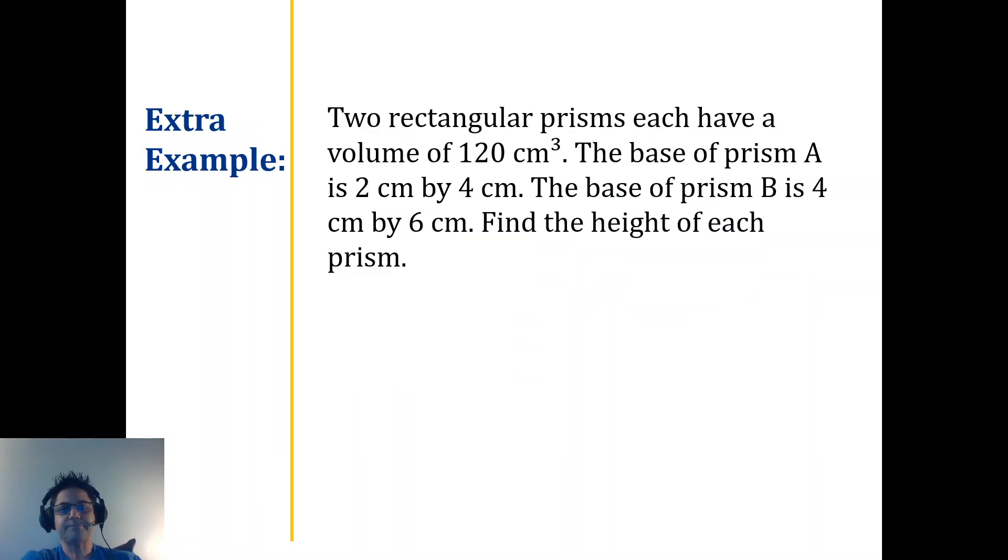All right, this is what we are working towards: our word problems. All right, two rectangular prisms each have a volume of 120 centimeters cubed, so that means they have equal volume. The base of prism A is 2 by 4, the base of prism B is 4 by 6. Find the height of each prism. So it's really just like two separate problems, if you will. They both have the same volume, so let's go ahead and break it up into two problems: problem A and problem B. So for problem A, we have 120 for the volume is equal to 2 times 4 times height. So again, one more time, use your parentheses please. We know 2 times 4 is 8, then we divide and that'll give us the height of our prism.